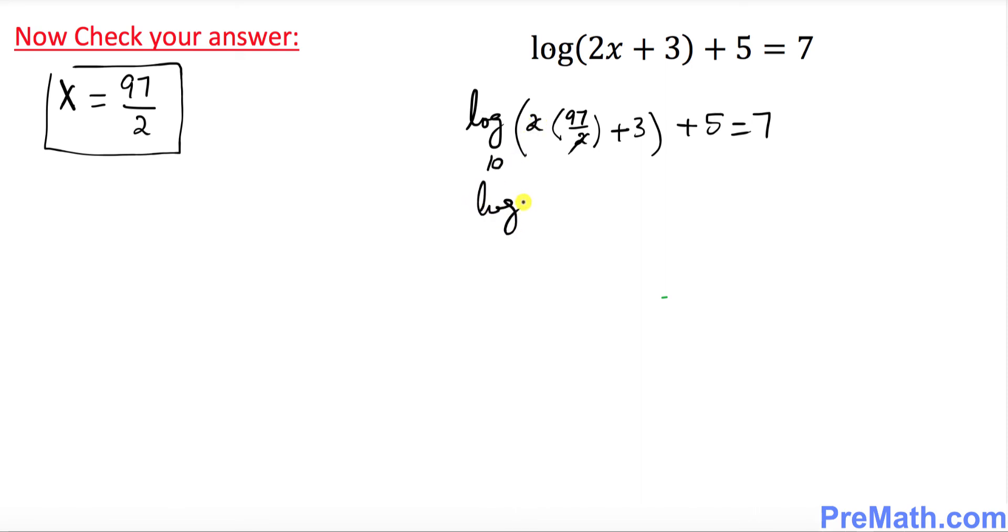So log of this becomes 97 plus 3 with base 10. I want you to move this 5 on the other side, so that becomes 7 minus 5. When you move a positive number on the other side, it becomes negative. This is going to be simply log of 100 with base 10 equals 2.